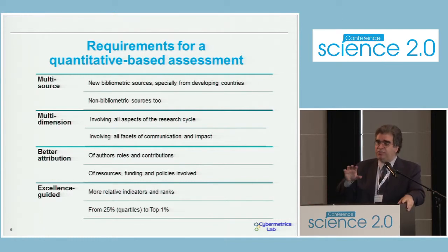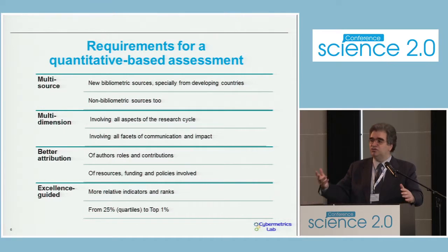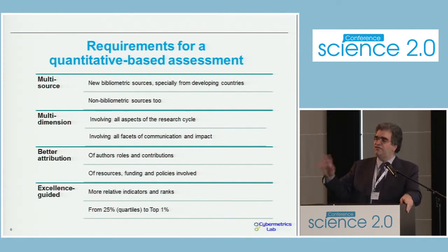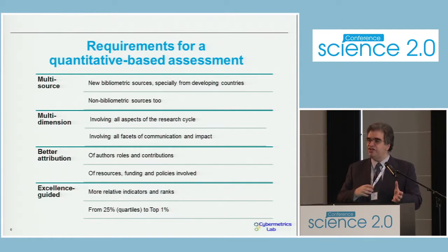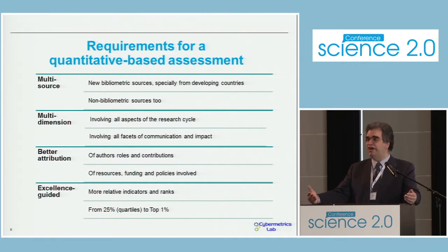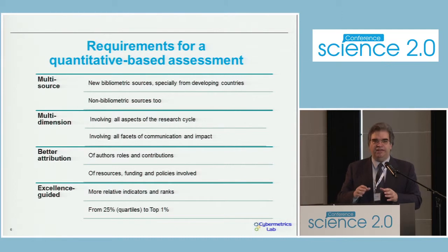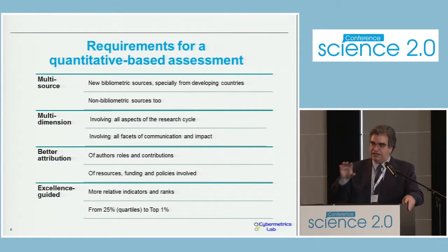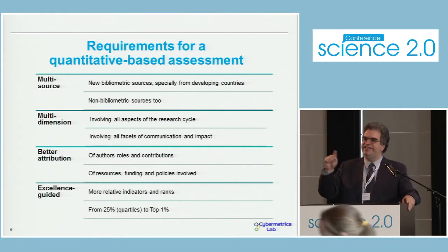From my point of view, building this scenario for the metrics tool, we need multi-source — not only one or two traditional sources like Web of Science or Scopus. We need to go to other additional sources, not only bibliometric but also non-bibliometric, and especially including contributions by developing countries or emerging economies. Second, they should be multidimensional — not only related to the final production, the number of papers published in standard journals, but also all aspects related to the research cycle should be counted. And not only in the research cycle, but also when considering the scholarly communication process.